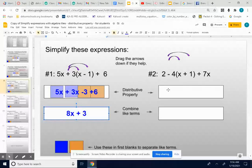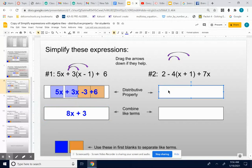Okay, problem 2: 2 minus 4 times x plus 1 plus 7x. I'm going to take my little arrows, bring them down. I'm going to use the distributive property first, which means take the number outside of your parentheses and multiply it to both parts.